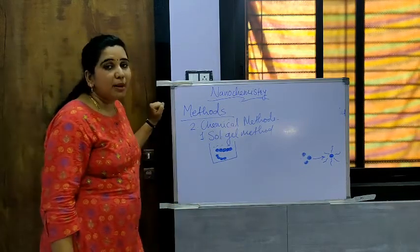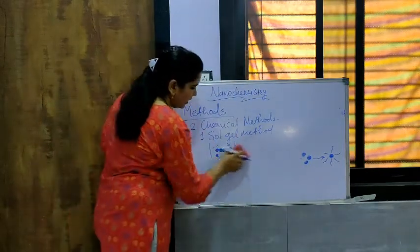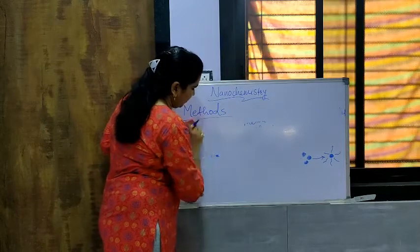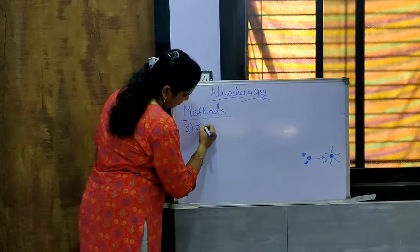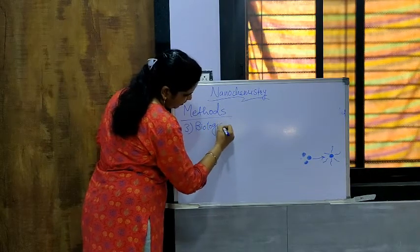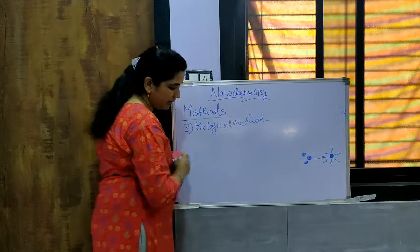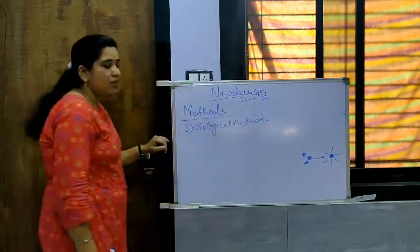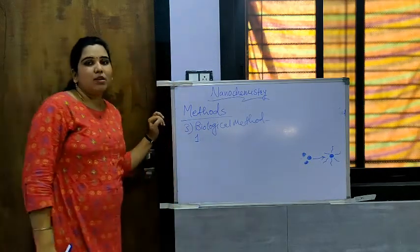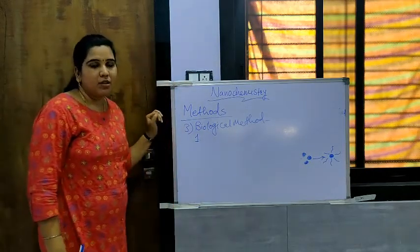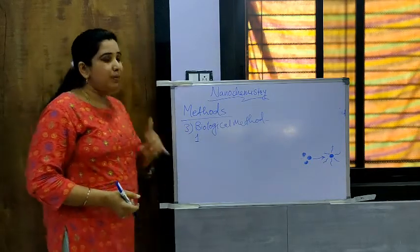Such type of gels are formed and when such nanomaterials are prepared this way, it is called the sol-gel method. These are the different chemical methods which are used on a very large scale. Next is the biological method — the third method to prepare nanomaterials. In biological methods, there are three main methods. Number one: by using bacteria, yeast, or fungus.